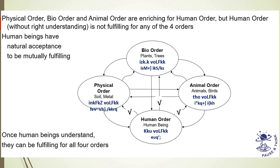We have to understand that we can be fulfilled only when we fulfill all four orders. It has to come by our own natural acceptance to mutual fulfillment. Hope you understood the concept. Thank you.